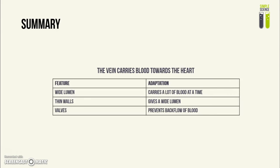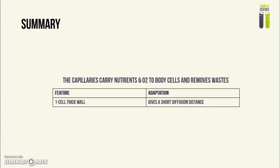The vein carries blood towards the heart. Its wide lumen means it can carry a lot of blood at a time, and thin walls contribute to that wide lumen. It has valves to prevent backflow of blood. Capillaries are very small blood vessels that carry nutrients and oxygen to body cells and take away waste. For IGCSE, the key feature is that the capillary wall is only one cell thick — not a cell wall — and this thin wall gives a short diffusion distance so that substances can diffuse at a faster rate.